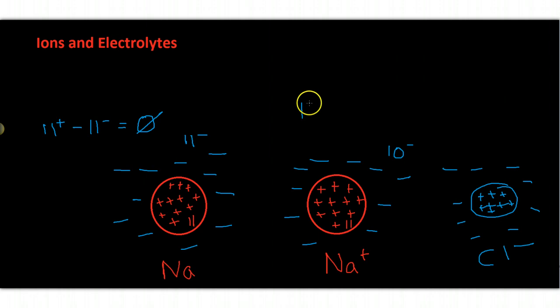So we have here the sodium atom that has 11 protons that are positively charged, but only 10 electrons. So we end up with a charge of plus one. And that is why it's written Na plus.